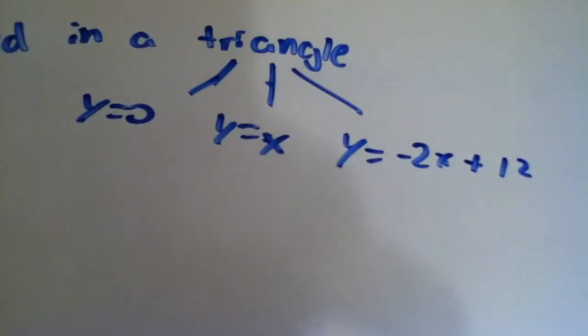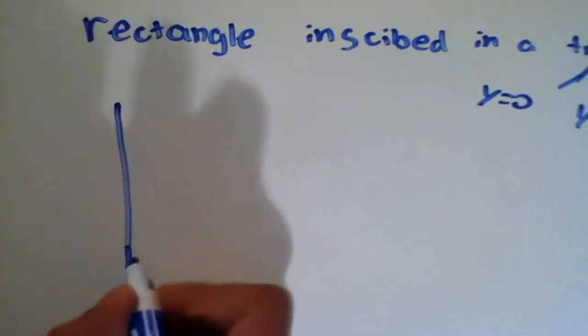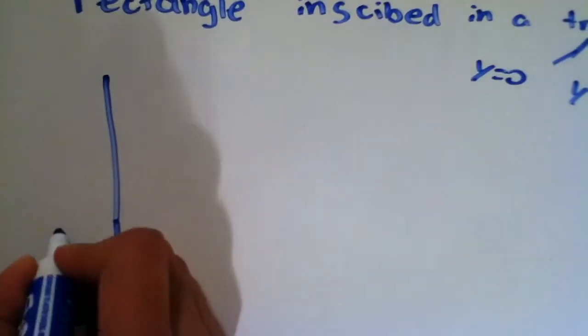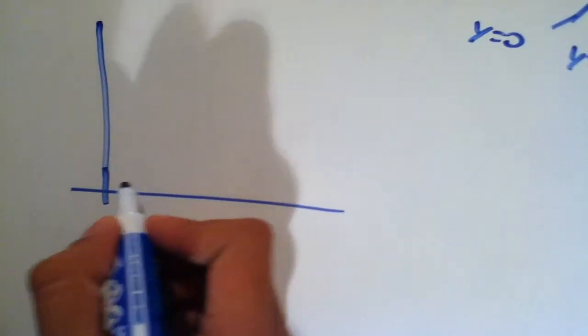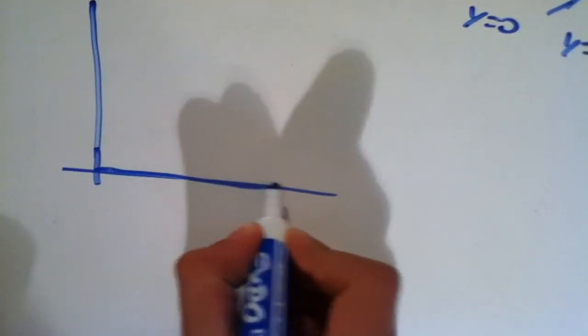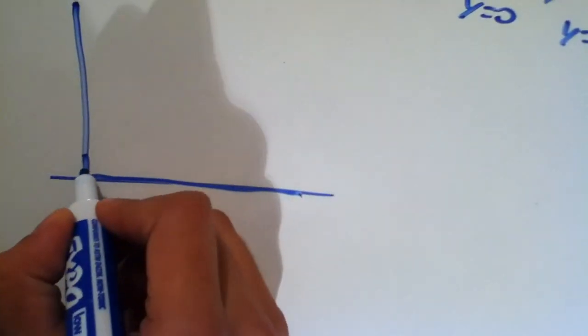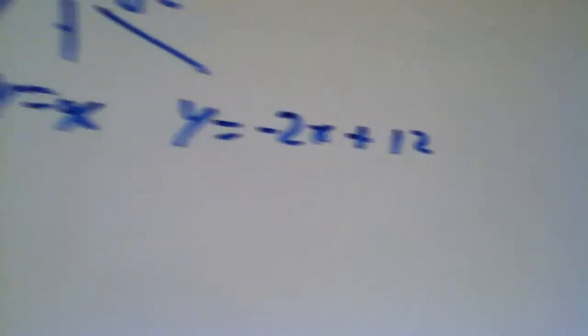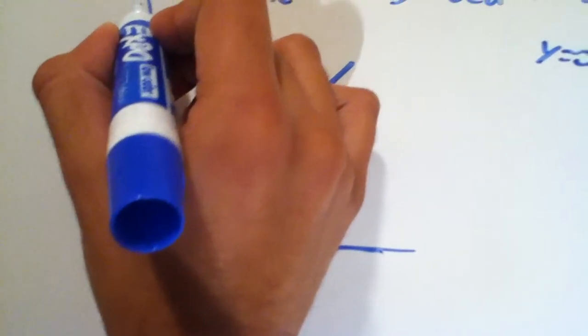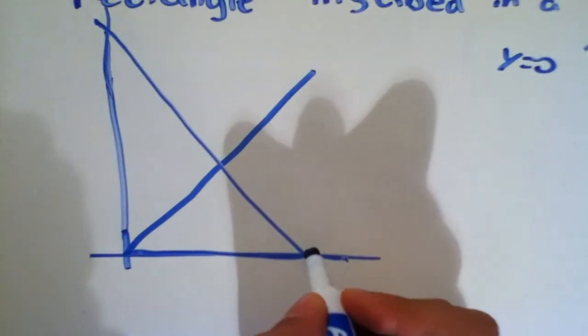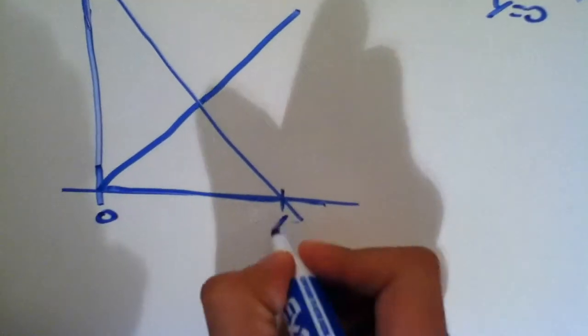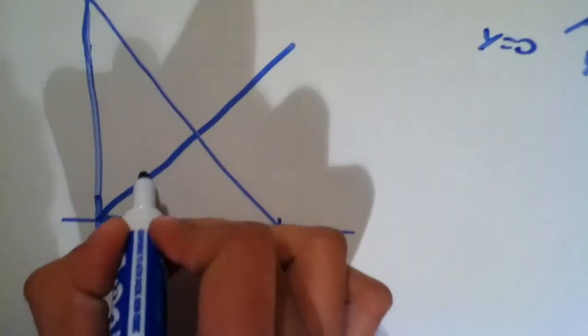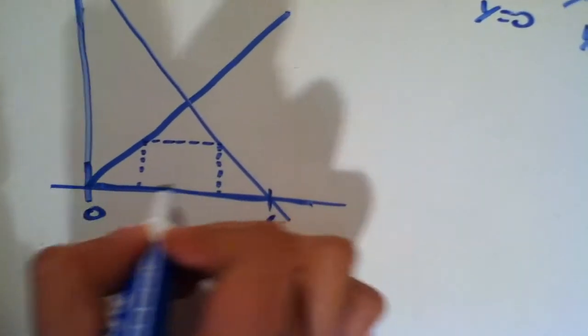So the next thing we should do is graph it, because that'll give us a visual understanding. Now, this entire problem is going to take place in the first quadrant, so that's all that I'm going to draw. So y equals 0 is just the x-axis. So that's the first line. Then, y equals x is here. And y equals negative 2x plus 12 has an intercept at positive 12 and goes down here, and this is 6. So, this is the triangle that the problem is talking about. This rectangle is going to be inscribed in this triangle. So let's just draw this rectangle.